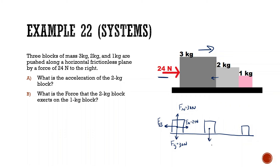For the 2 kg block: force of gravity 20 N, force normal 20 N. The 3 kg block pushes on it to the right (F3-on-2), and the 1 kg block pushes back to the left (F1-on-2).